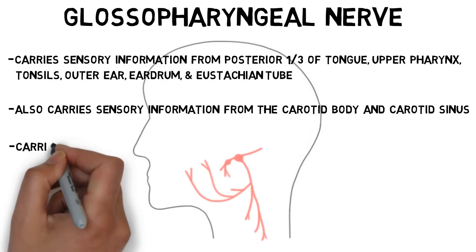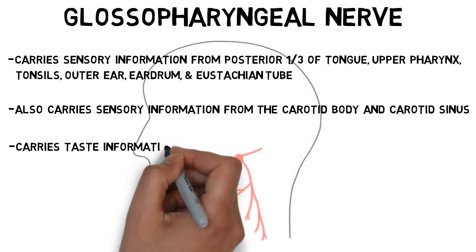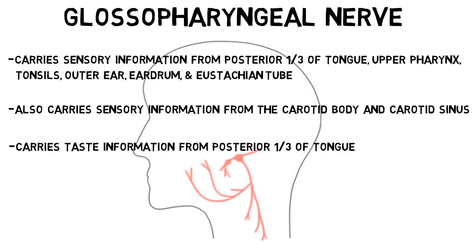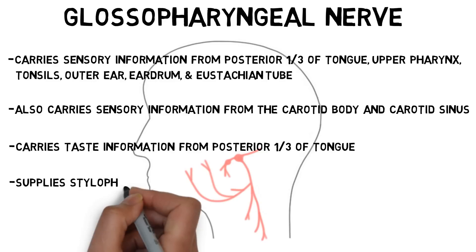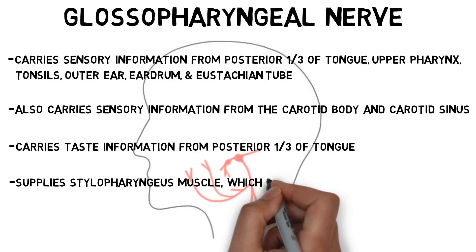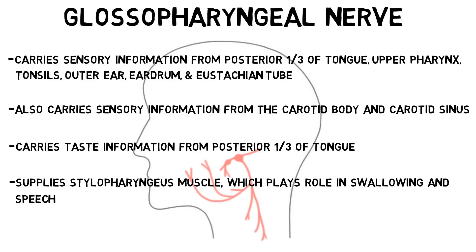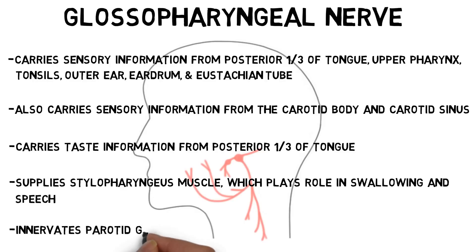The nerve also conveys taste information from the posterior third of the tongue, and carries motor signals to the stylopharyngeus muscle, which plays a role in swallowing and speech. And it innervates the parotid gland, the largest of our salivary glands.